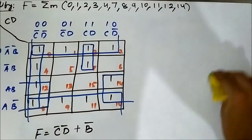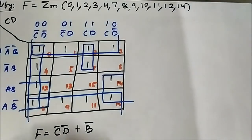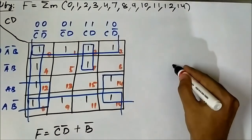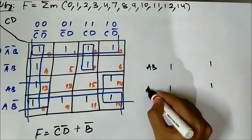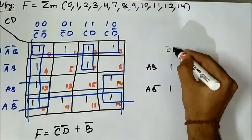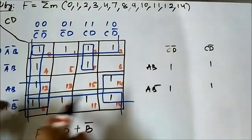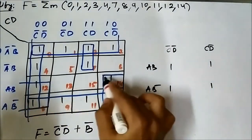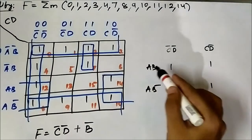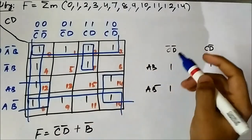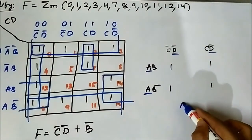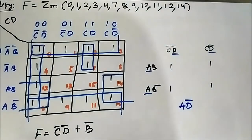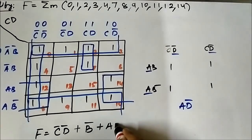Let us take this quad involving cells 12, 8, 14, and 10. The horizontal components are AB and AB̄, and the vertical components are C̄D̄ and CD̄. In the horizontal side we have A common. In the vertical side we have D̄ common. So A and D̄ — that is AD̄ — will be the common set of variables which will be part of the simplified boolean expression.